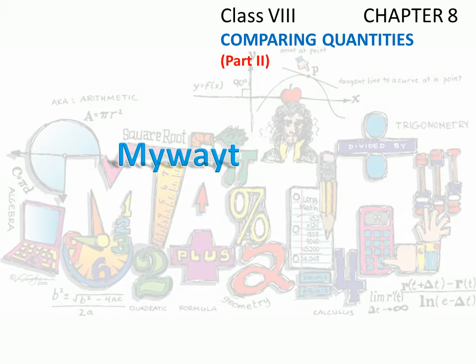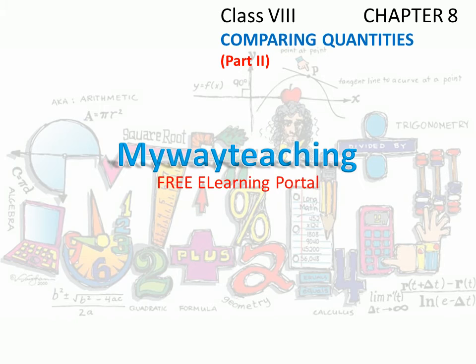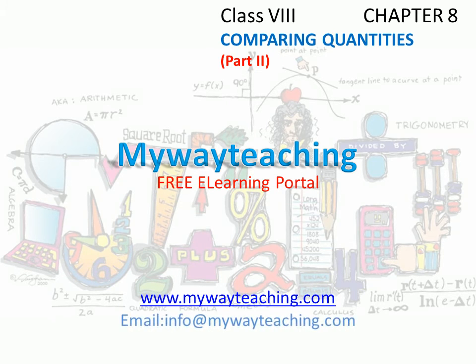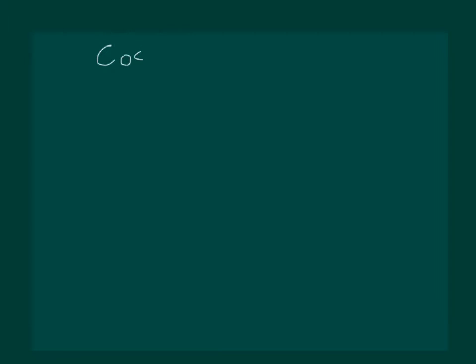Hello friends, this video is brought to you by myway teaching dot com. Let's start with the concept of cost price of an object. Cost price is basically the price at which an article is purchased or it is manufactured. We denote cost price by CP.